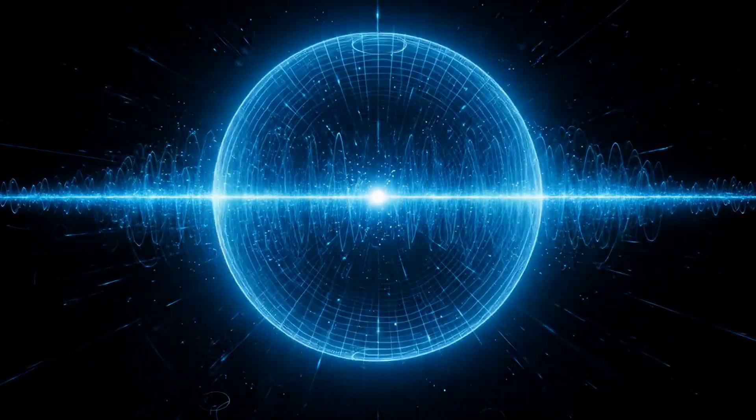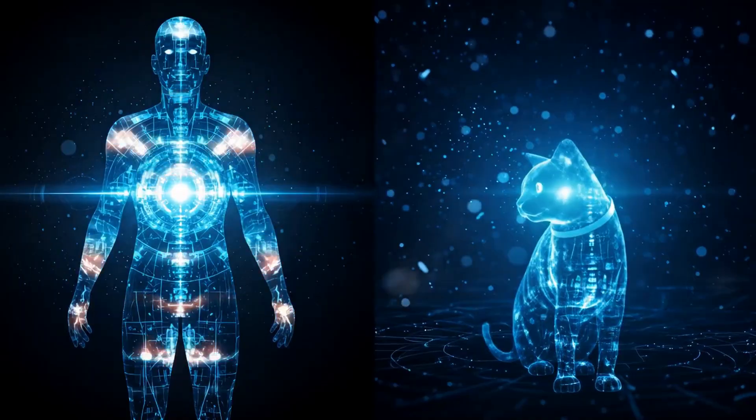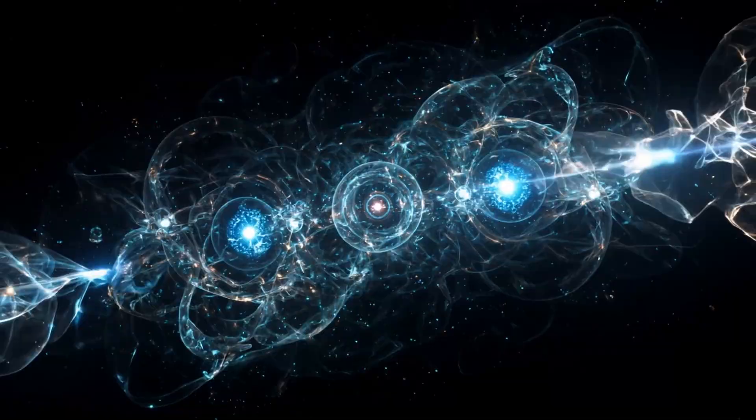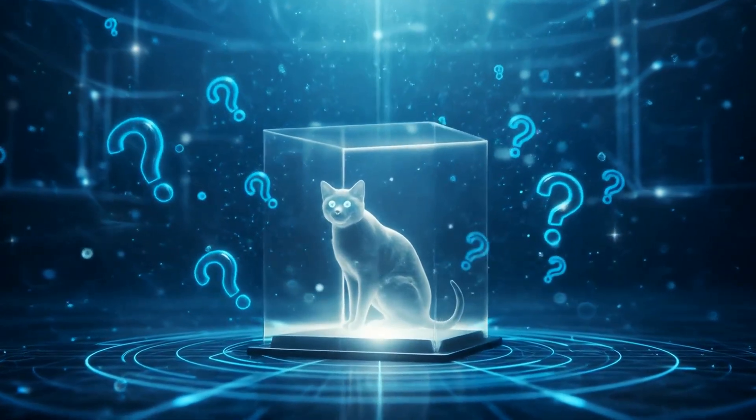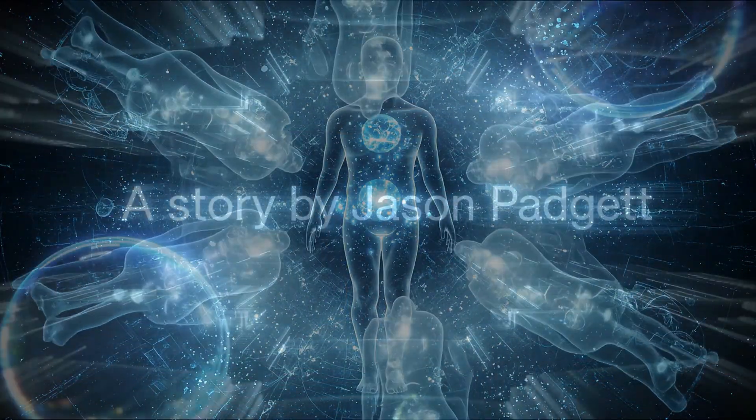It is the projector, the observed, and the observer. You do not watch from outside. You are made of the same light as the cat, and your observation rewrites the geometry. So do not ask whether the cat is dead or alive. Ask instead, which version of you just opened the box?